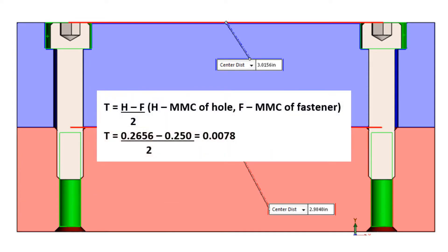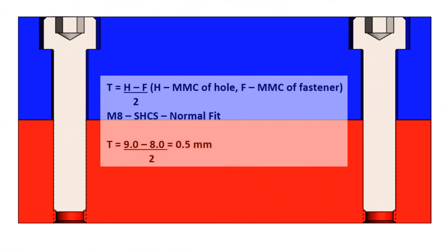If the clearance hole was changed to a normal fit, the hole size would be 0.2656 and the positional tolerance would now be 7 thou 8 tenths. If the clearance hole was 9 millimeters and the socket head cap screw was an M8, the positional tolerance would be 0.5 mm.